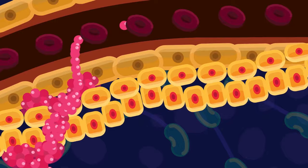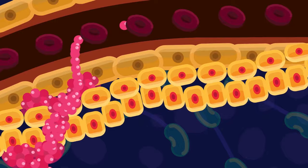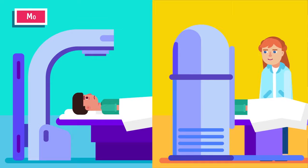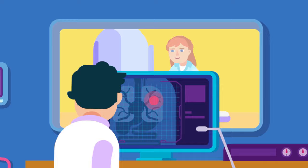Metastasis, M. M describes whether the cancer has spread to a different part of the body. There are two main stages, M0 and M1. M0 means the cancer has not spread to other parts of the body. M1 means cancer has spread to other parts of the body, such as the lungs or liver.